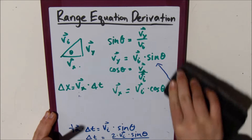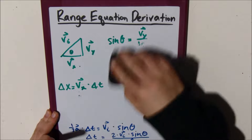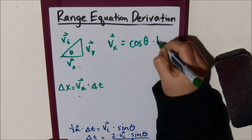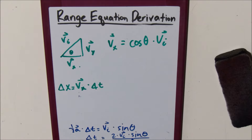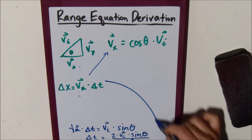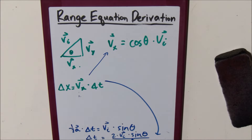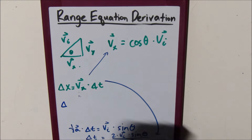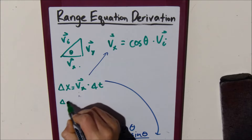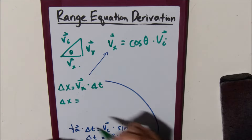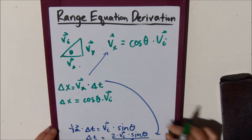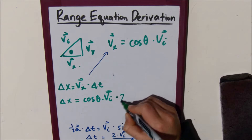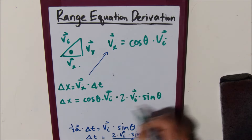Let me rewrite our v x equals cosine theta times v initial. We're going to take what we solved for — v x and delta t — and plug them into our horizontal equation to solve for delta x, which is our range. So delta x equals cosine theta times v initial, times 2 times v initial times sine theta, all over acceleration.